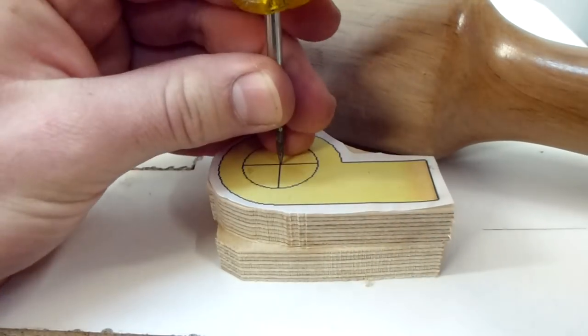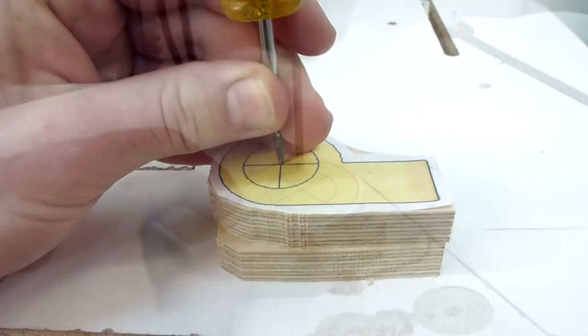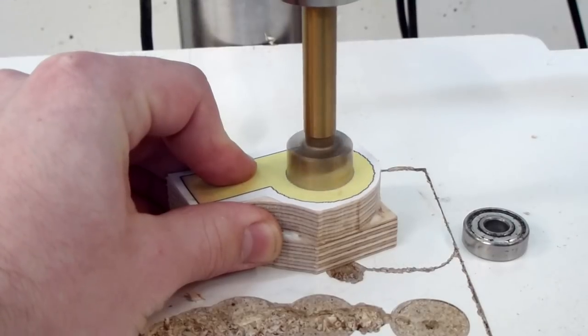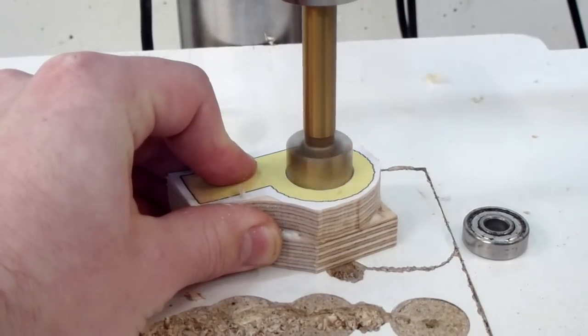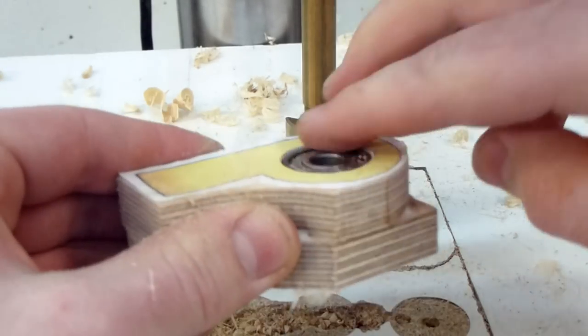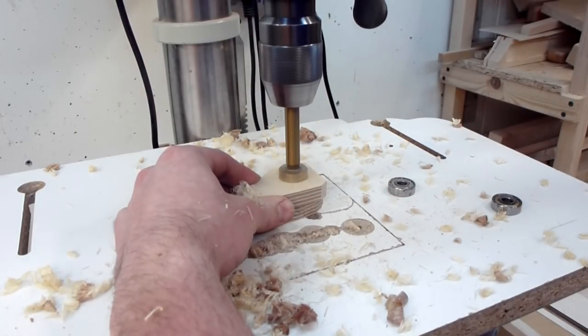When the glue is dry punch the center and drill all the way through with a small bit to locate the center on the other side. Then with a forstner bit with the size of the bearing drill until you can sink the bearing a little beneath the surface. Do the same for the other side.